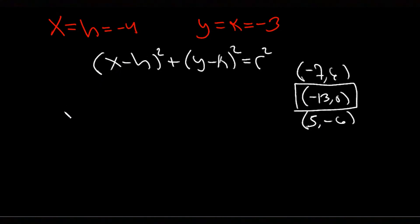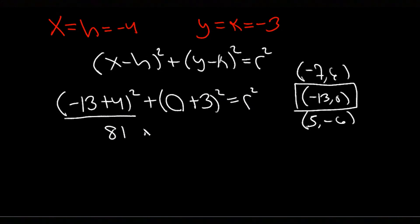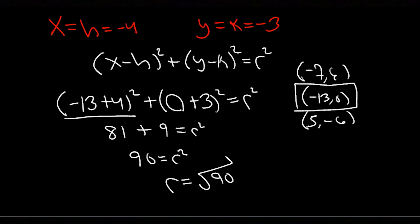Plugging in: x = -13 and h = -4 gives (-13 - (-4))² = (-9)² = 81. Then y = 0 and k = -3 gives (0 - (-3))² = 3² = 9. So 81 + 9 = r², meaning r² = 90, and radius = √90.